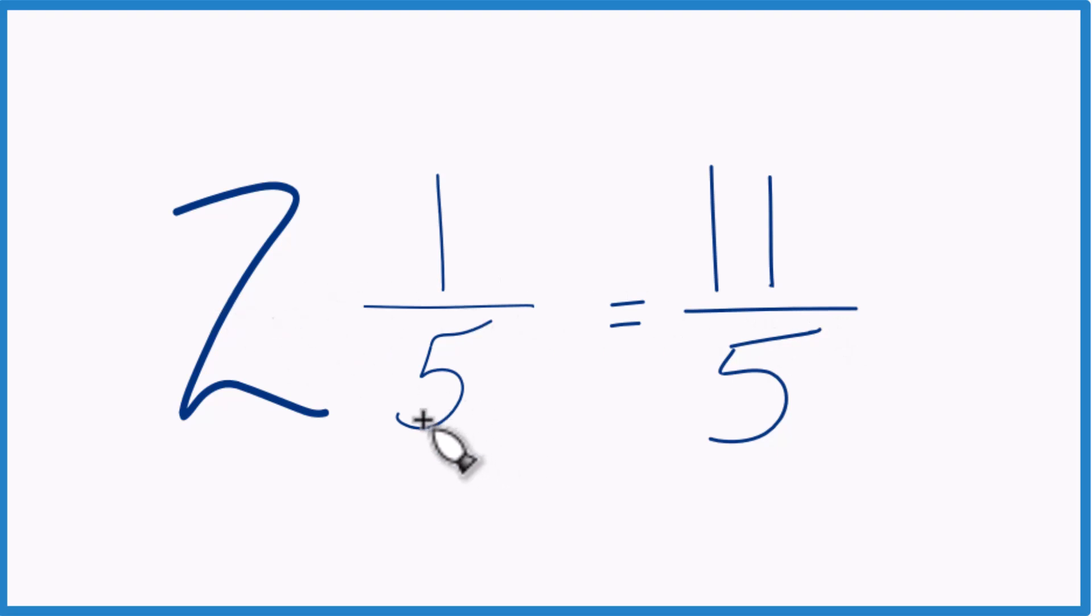Let's look at that again. 2 times 5 is 10. 10 plus 1, that's 11. Bring the denominator across, you got it.